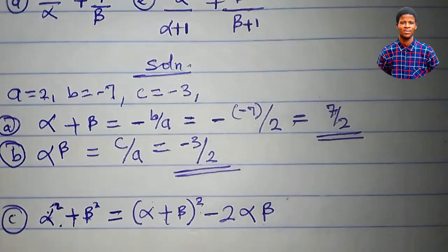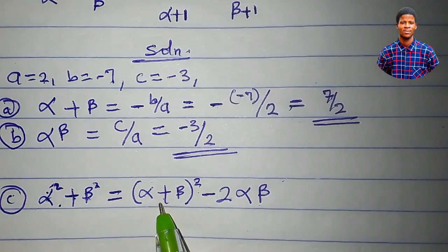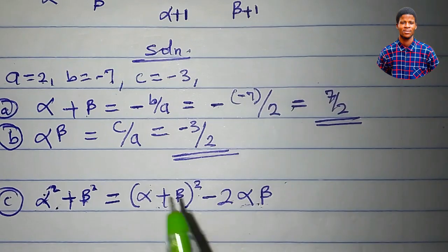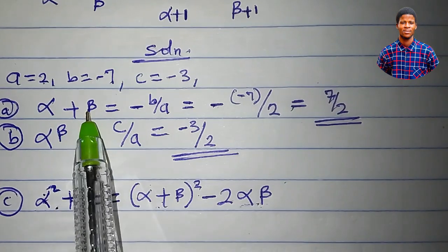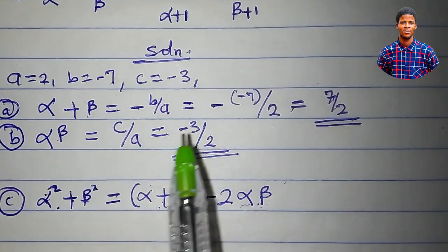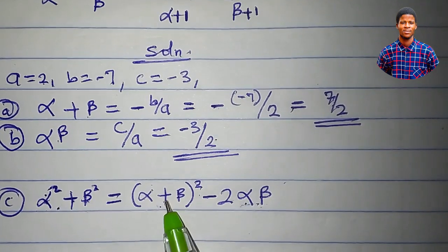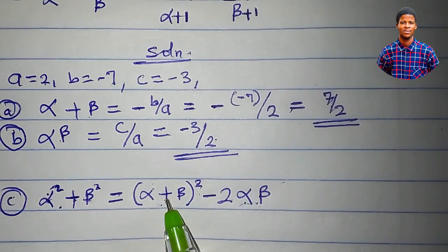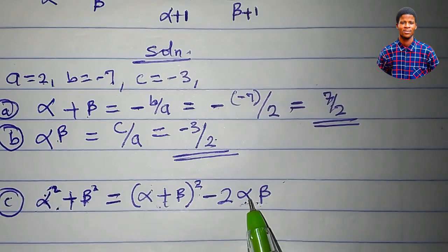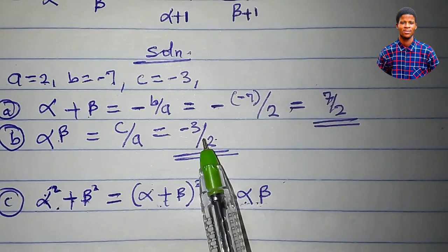You must be familiar with algebraic identities like the sum of two squares or the sum of two cubes to evaluate expressions like this. We can see that alpha plus beta and alpha beta appear in the identity. We already have alpha plus beta equal to 7 over 2 and alpha beta equal to minus 3 over 2, so we substitute those values in.